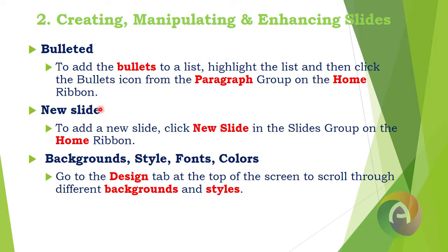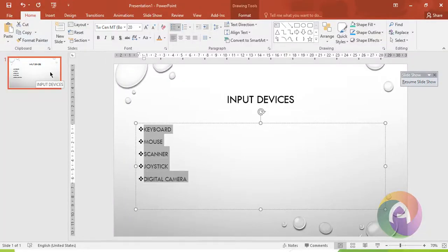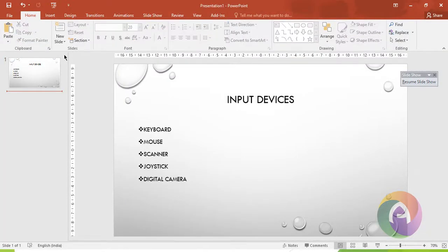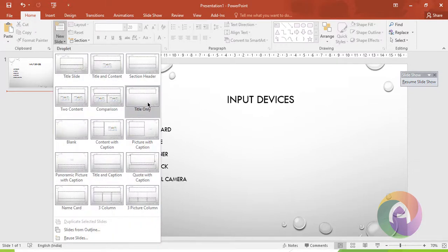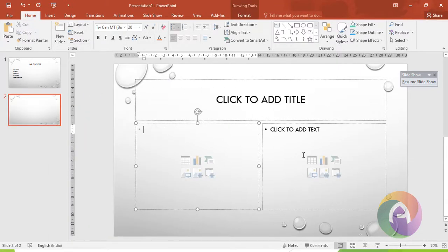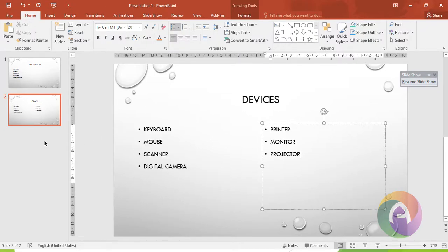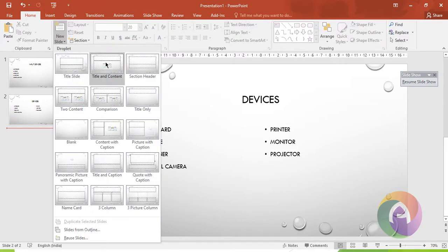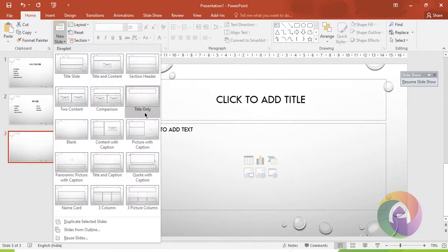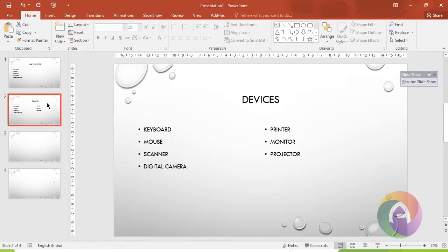Next is adding a new slide. Our current slide has a theme applied. To add a new slide, click New Slide in the Slides group on the Home ribbon. A new slide is added with the same theme. You can enter content on this new slide with headings for different components such as input or output devices. We can continue adding a number of slides by clicking New Slide each time.